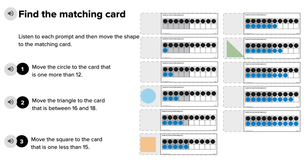Move the circle to the card that is 1 more than 12. Move the triangle to the card that is between 16 and 18. Move the square to the card that is 1 less than 15.